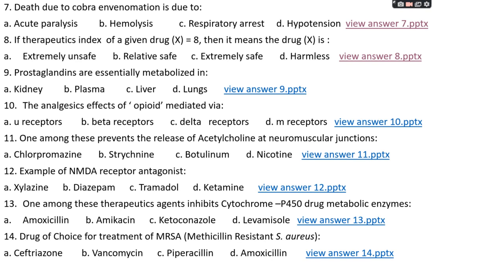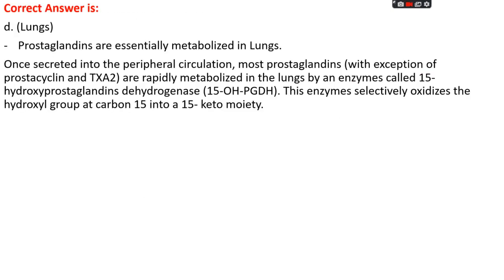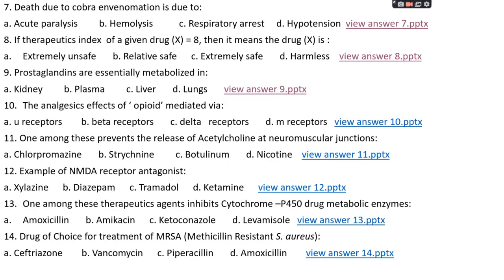Question number nine: prostaglandins are essentially metabolized in — option A: kidney, option B: plasma, option C: liver, or option D: lungs. The right answer is option D, lungs. Prostaglandins are essentially metabolized in the lungs. Once secreted into peripheral circulation, most prostaglandins — with the exception of prostacycline and thromboxane A2 — are rapidly metabolized in the lungs by the enzyme 15-hydroxy prostaglandin dehydrogenase.